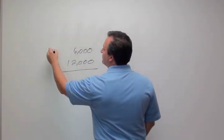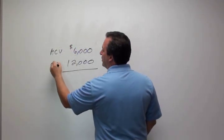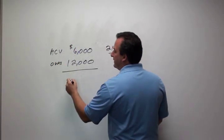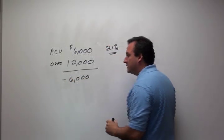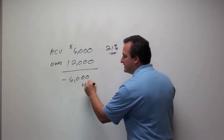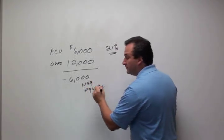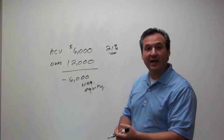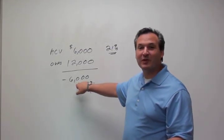If the car has an actual cash value of six thousand dollars but she owes twelve thousand, that means she is upside down six thousand. This is referred to in the industry as negative equity. Other terms: she's upside down, she's buried, she's hooked.